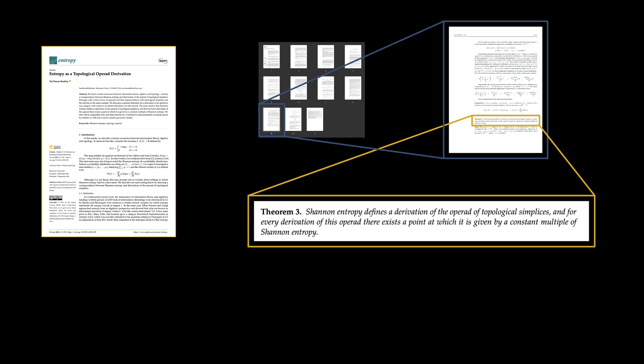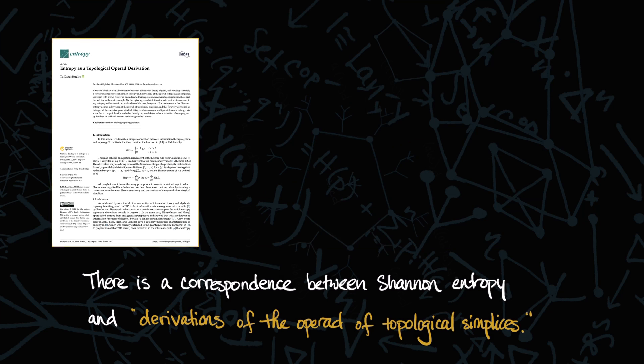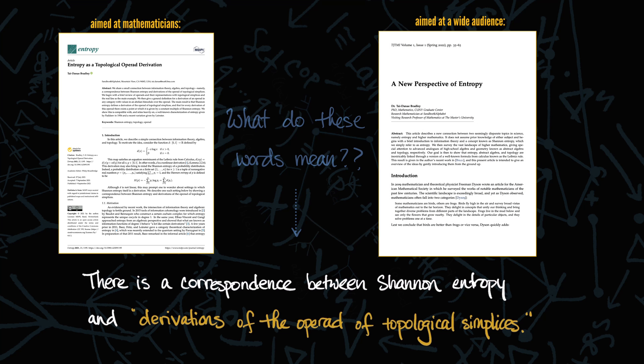That's the new small theorem I mentioned earlier. There's a way to go back and forth between Shannon entropy and what I call derivations of the operad of simplices. Explaining this correspondence and the words involved is the goal of this paper.